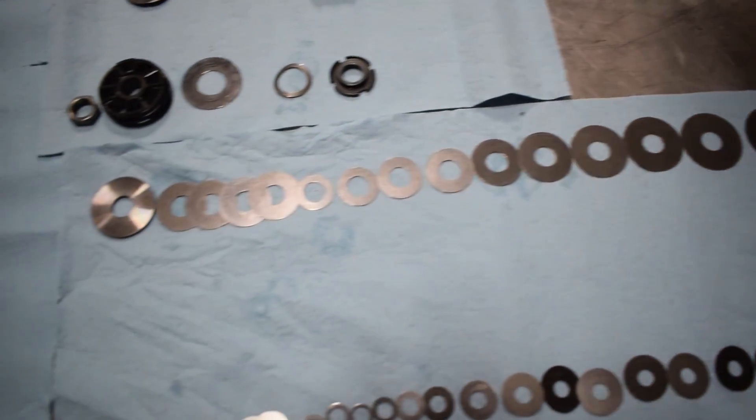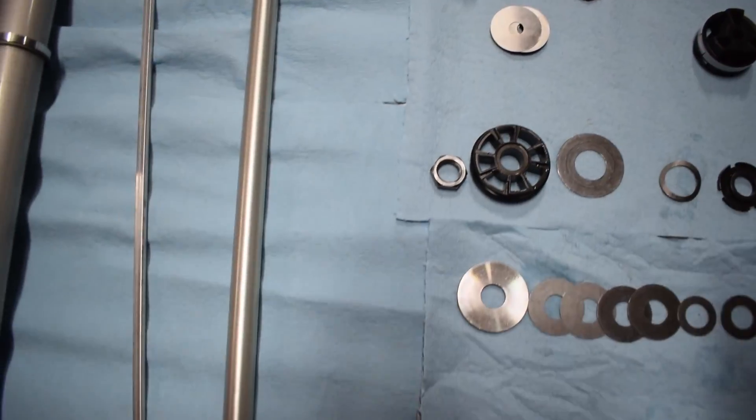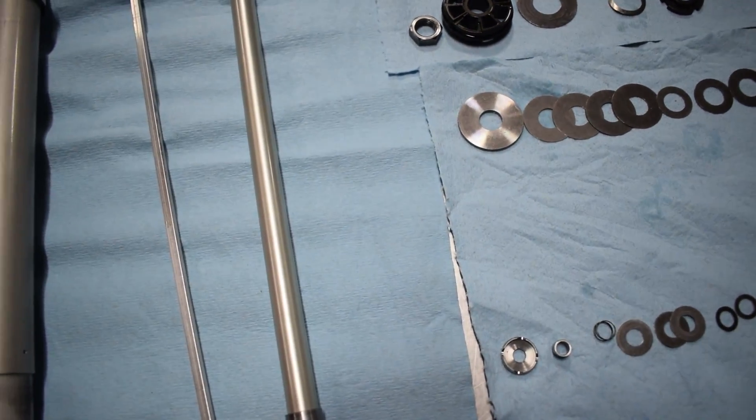KYB is in the same boat. Now here's the base valve. Shims laid out. There's the actual base valve there. This bike uses a very large shaft on the base valve.